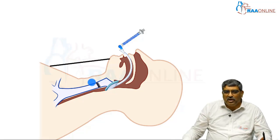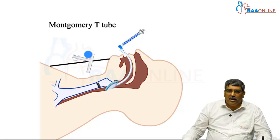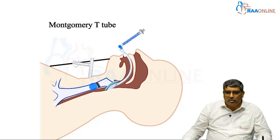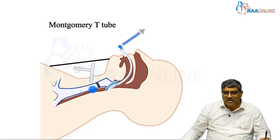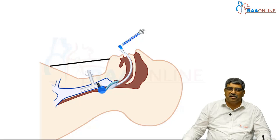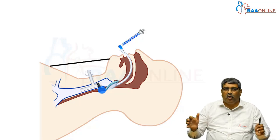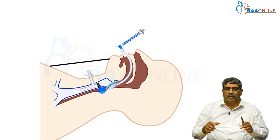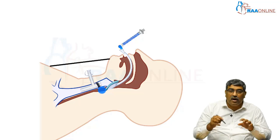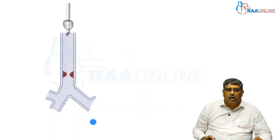A Montague tube or a tracheostomy tube can be passed in some cases. The Montague tube can maintain the patency of the airway. These two things you also follow in the post-operative period. This is for upper tracheal resection.